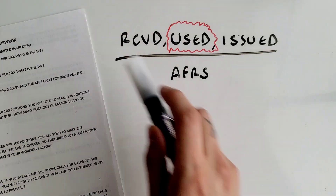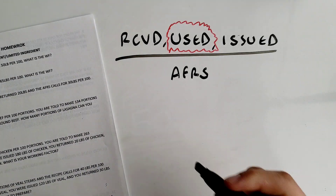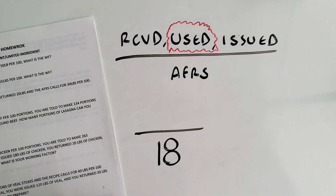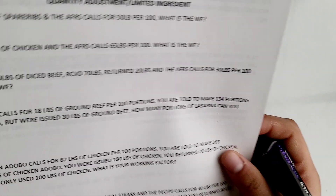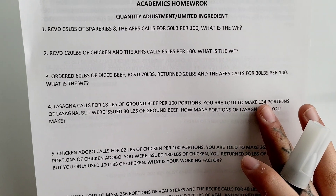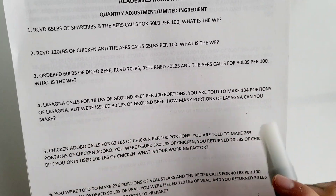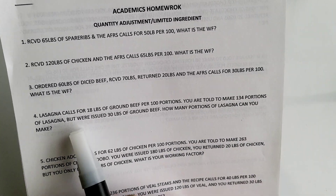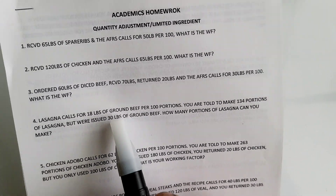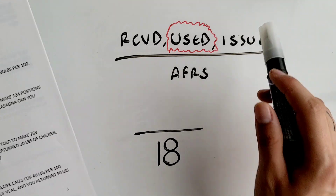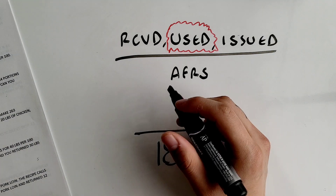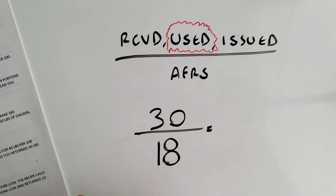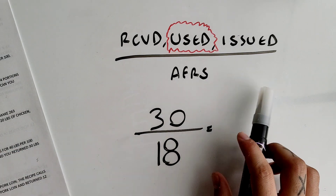So 18 goes at the bottom as your AFRS. The 134 portions is just a number to throw you off — don't pay attention to it. You were issued 30 pounds of ground beef, and 'issued' means it goes on top, so put 30 at the top and divide these two numbers.